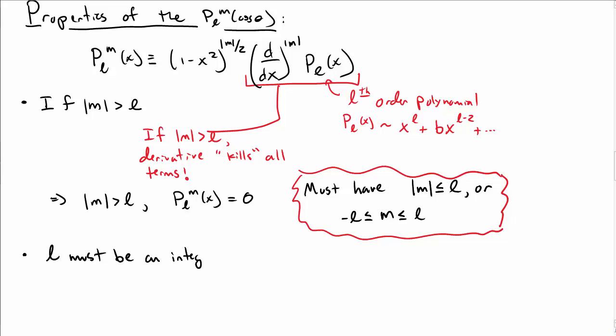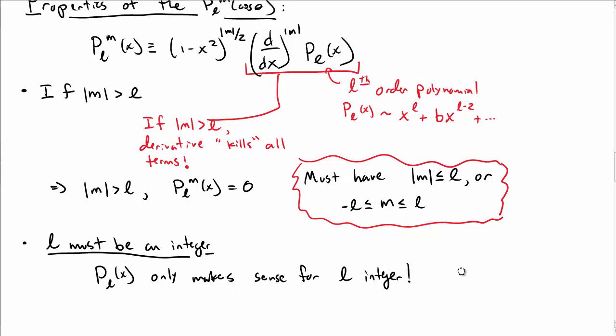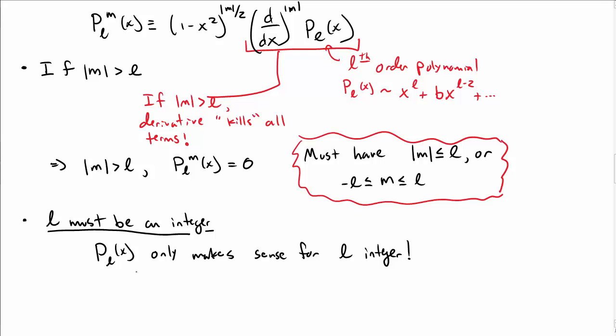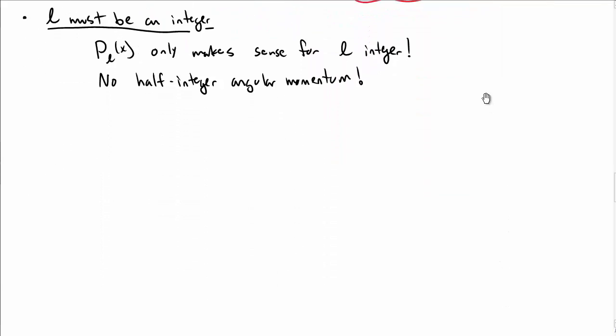In addition, we see that L must be an integer. And that's more just because our associated Legendre functions are defined in terms of Legendre polynomials, and P_L only makes sense when L is an integer. You can define Legendre functions, but they don't really make sense in the same way for our types of boundary conditions. So that means there's no such thing as half-integer angular momentum. You can't have L equal to 1/2 or 3/2. You can only have 0, 1, 2, and so on.